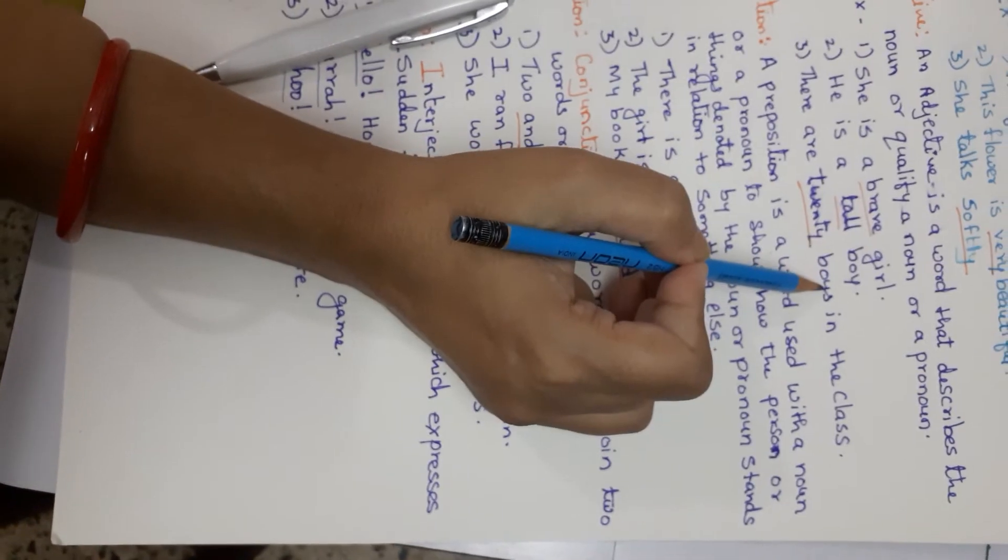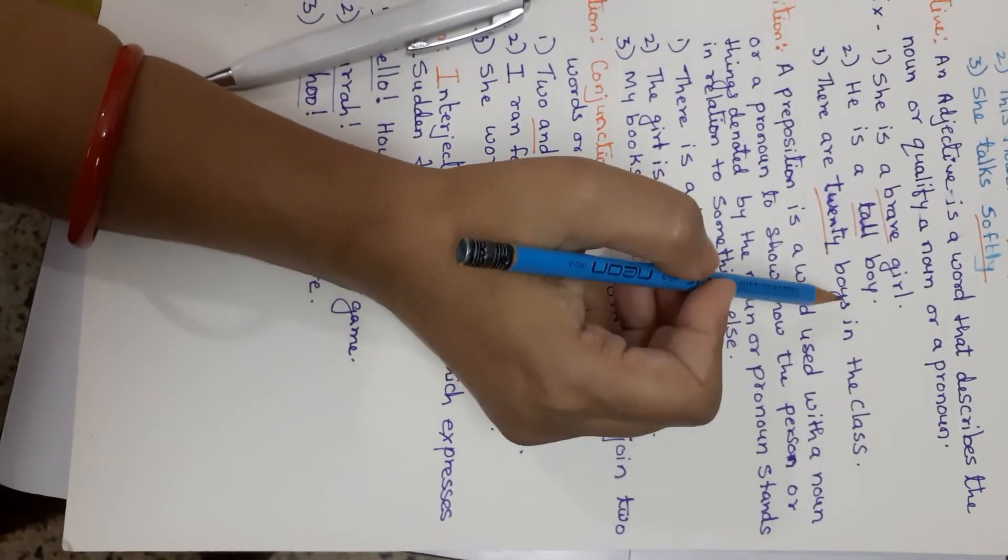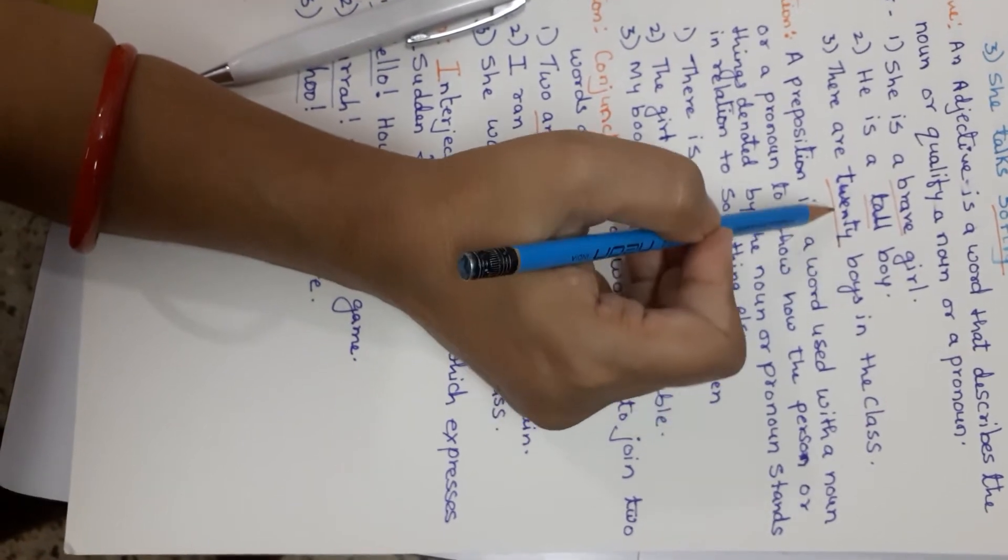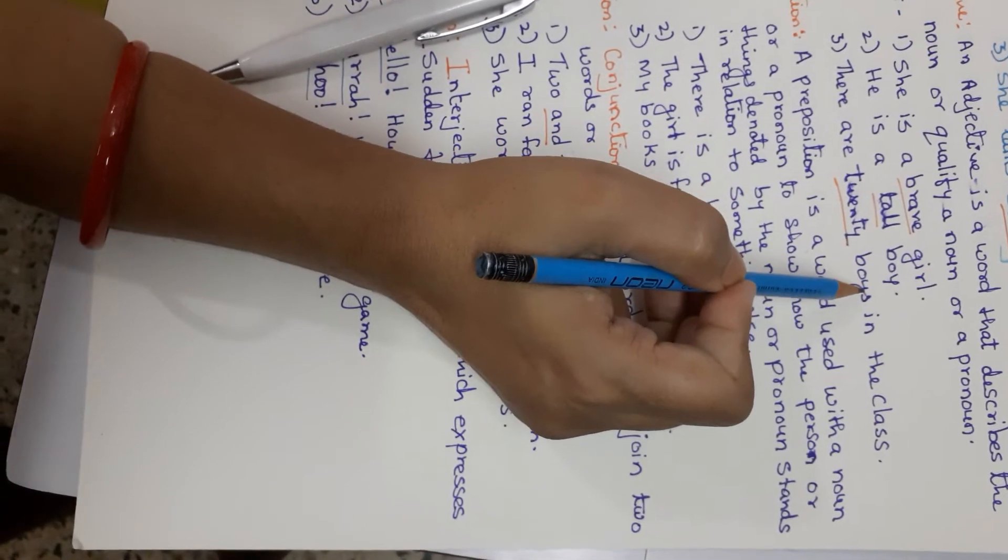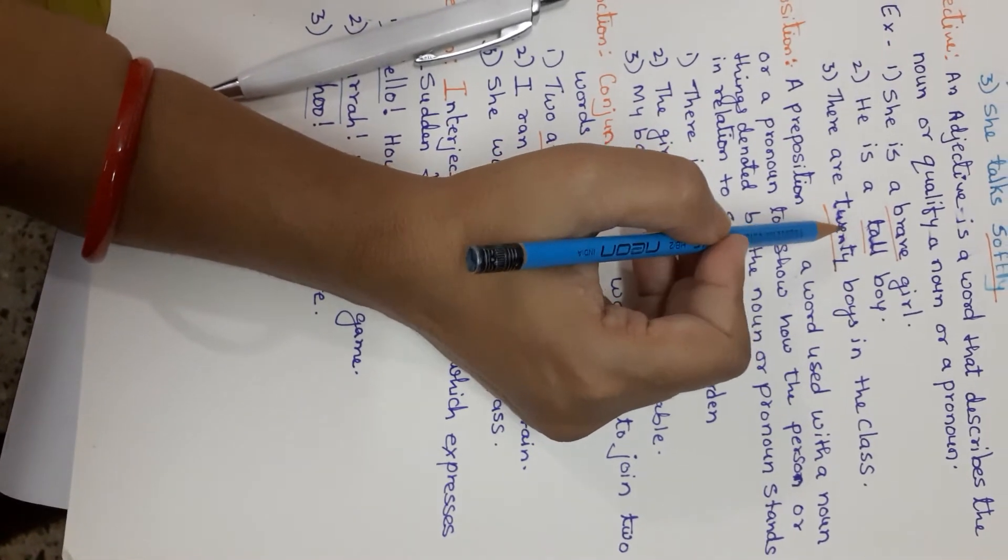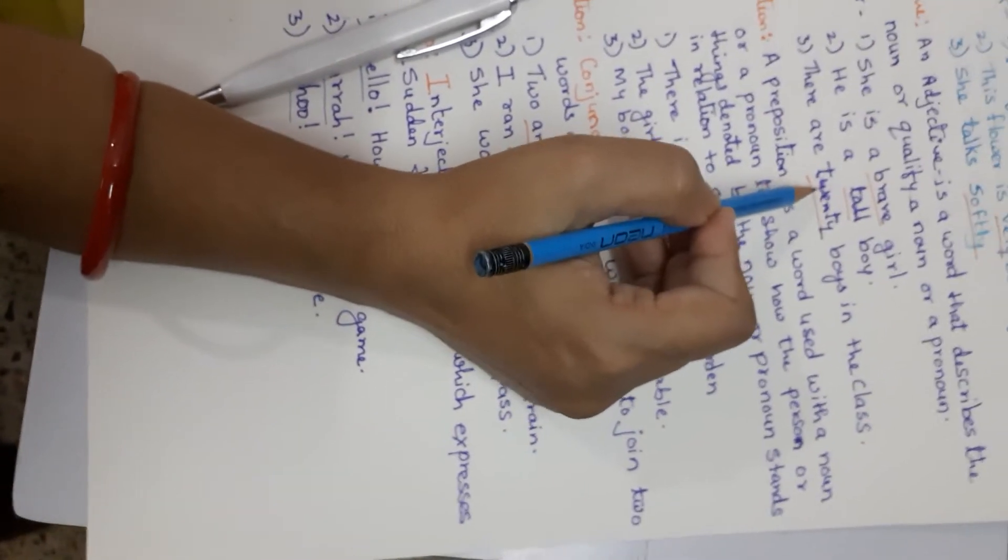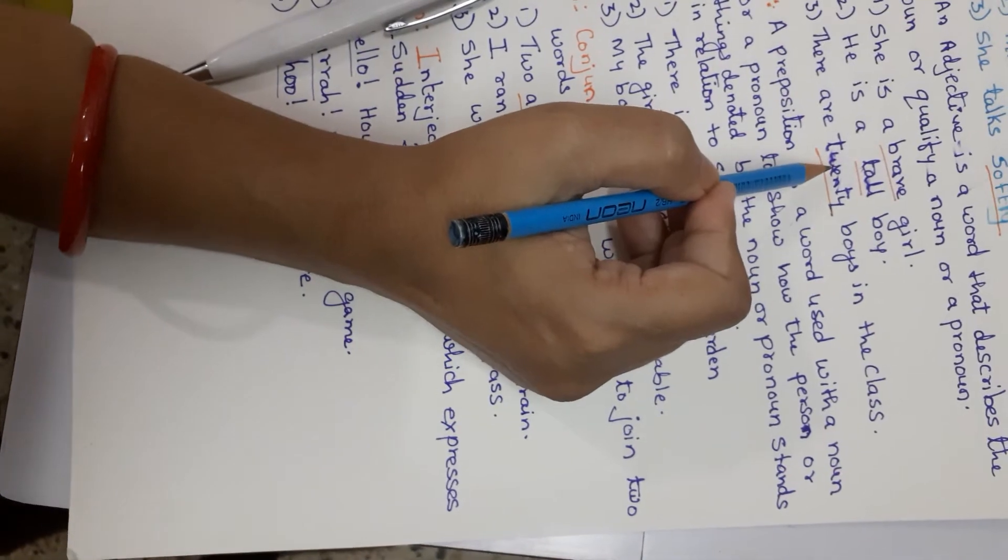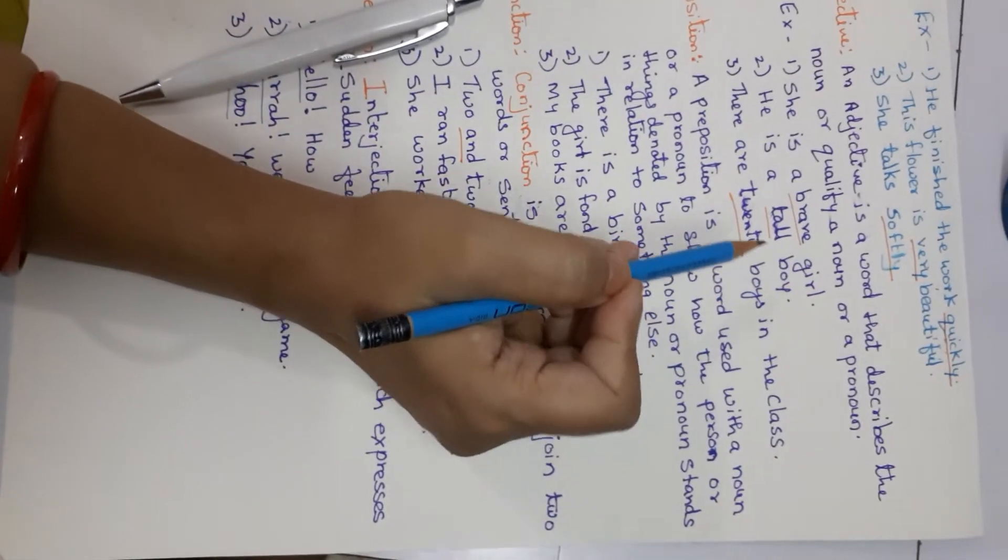So these are adjectives. There are 20 boys in the class. Boys are told. But how many are there? 20. They are describing how many boys are there, qualifying the nouns. So this is what adjective.